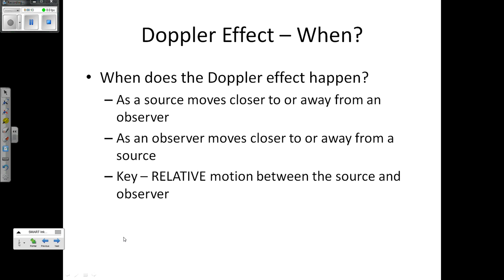When does the Doppler Effect occur? It occurs as a source moves closer to or away from an observer, or as an observer moves closer to or away from a source. The key here is relative motion between source and observer. The easier way to think about this is: the source is something making a sound, like an ambulance, and the observer is the person listening to it.